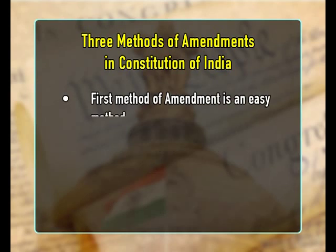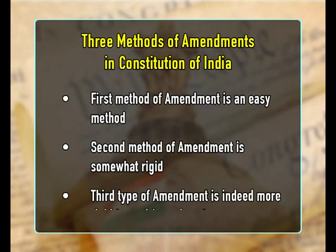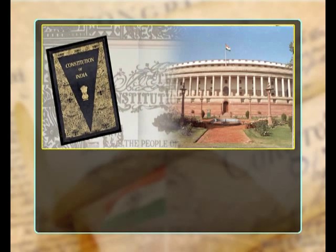While the first method of amendment is an easy method, the second method of amendment is somewhat rigid, and the third type of amendment is indeed a more rigid type. It has been incorporated for granting more protection to the federal features of the constitution against the possible unilateral attempts of the union to change these for its own advantage.